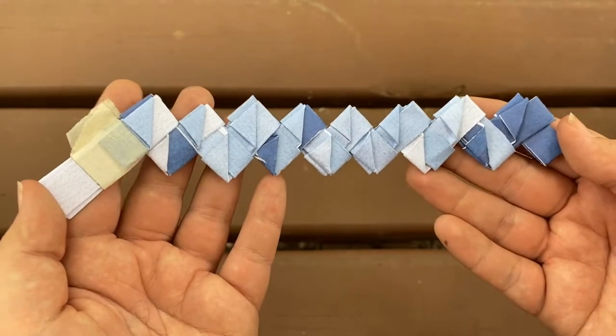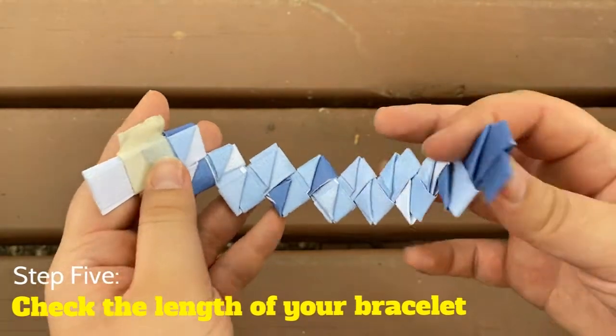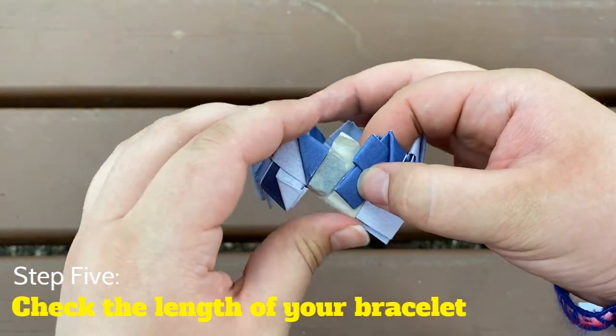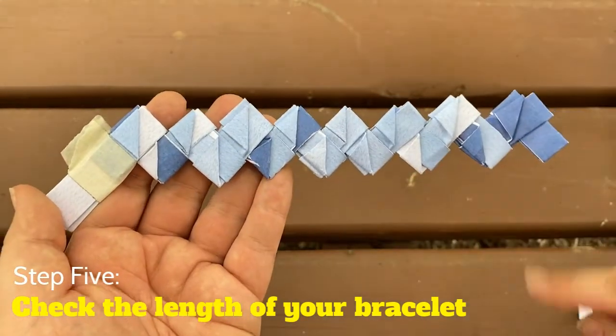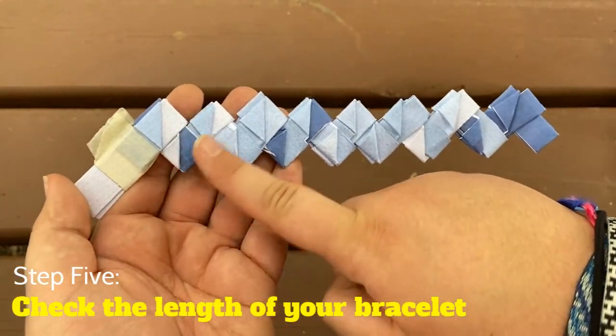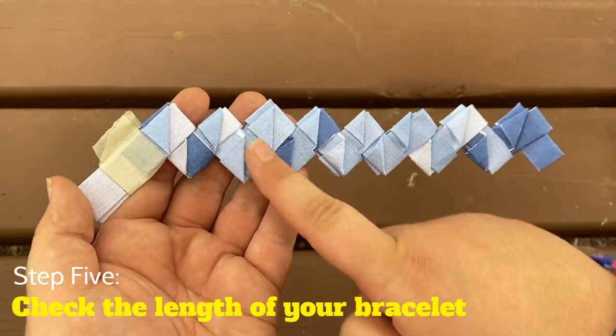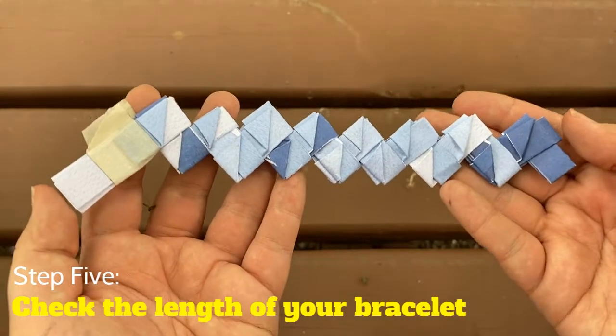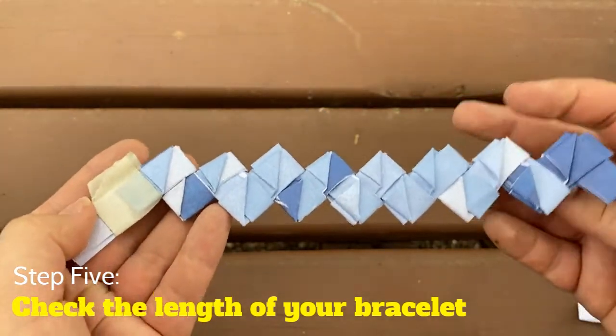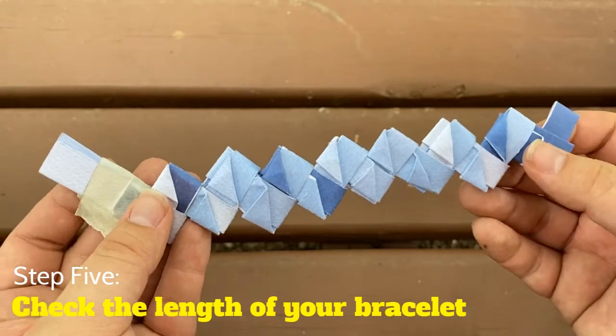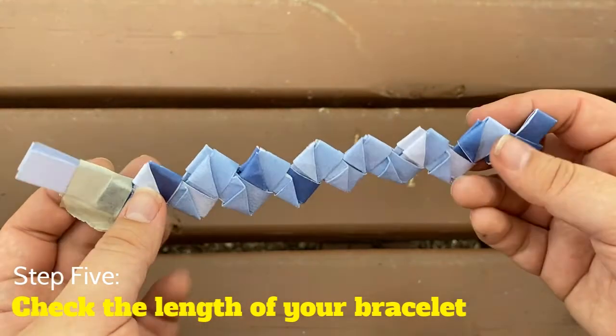As you're making it, you want to make sure that you measure your bracelet around your wrist, so that way it's big enough. Once it wraps around and you feel comfortable with it, then you know that you're ready to finish it. An important thing to notice is that the bracelet should look like a zigzag, so it should go up, down, up, down, up, down. You want to make sure that the first piece and the last piece are both in the same direction, so either they're both down or they're both up. That'll make sure that the zigzag continues when you finish it.